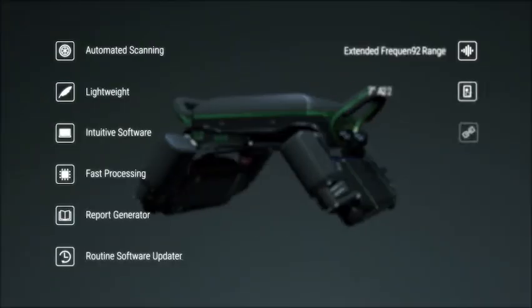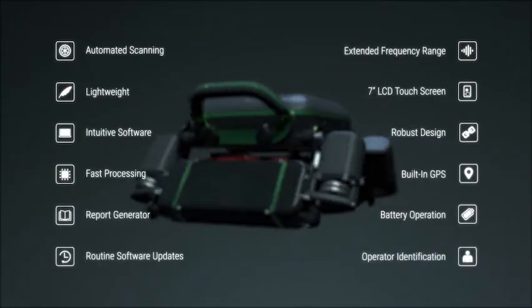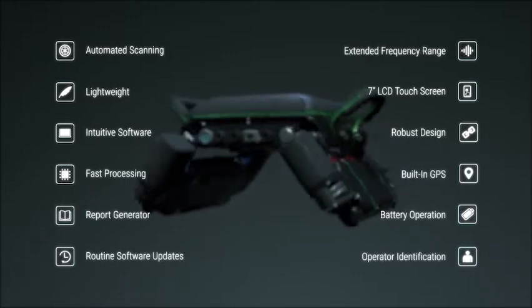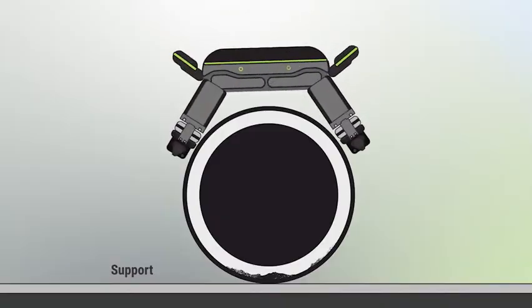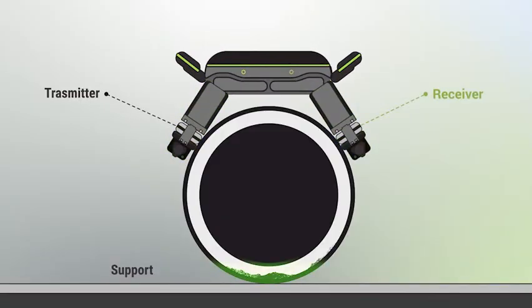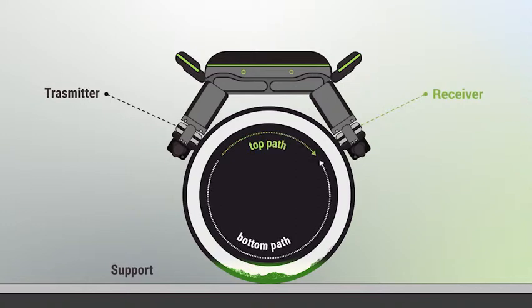The QSR1 is a scanning tool designed to measure pipe wall thickness indirectly. It is placed on the pipe and uses short-range guided waves traveling around the circumference of the pipe to accurately measure the wall thickness.